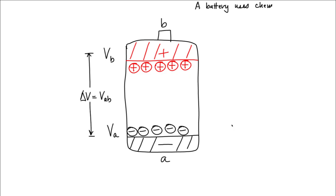So let's summarize what I just said. A battery uses chemical reactions to separate charge, thereby creating a potential difference.